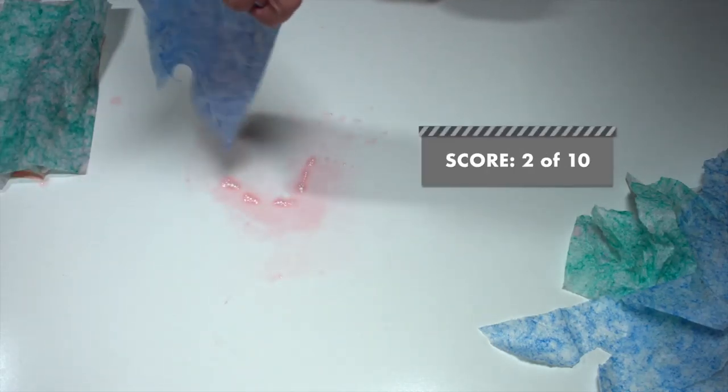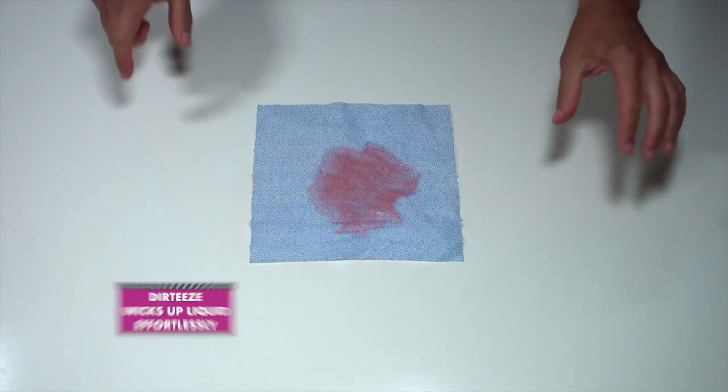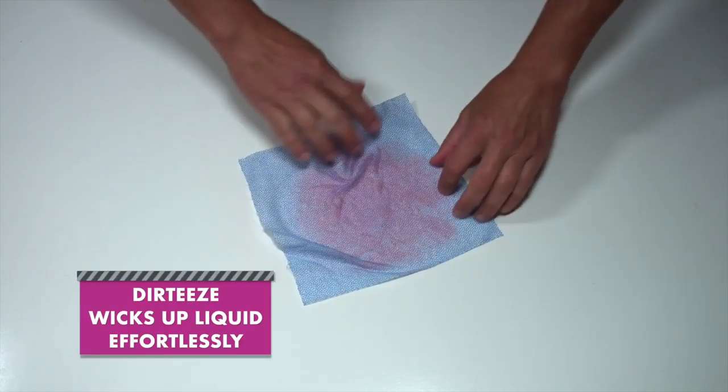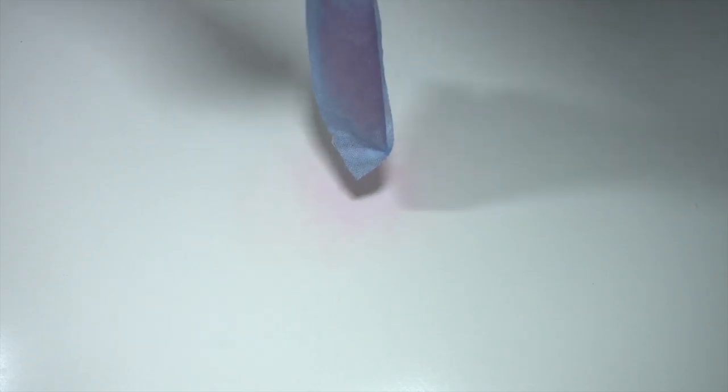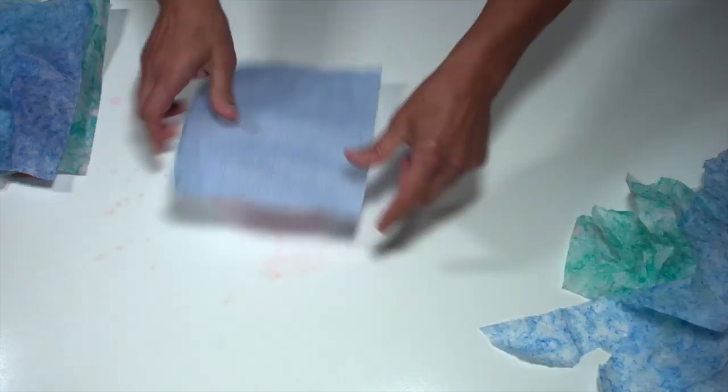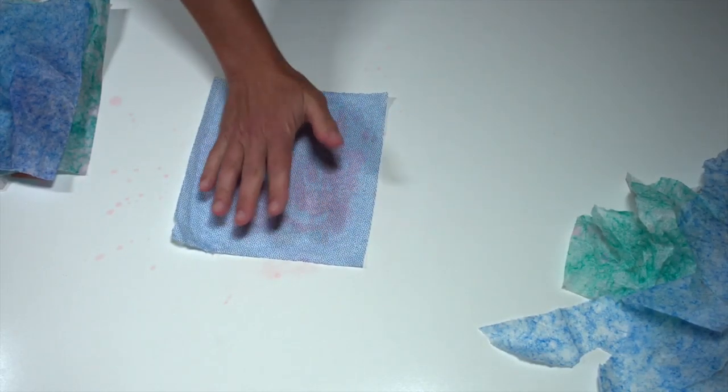Dirty's rough and smooth wicks up all the liquid, leaving basically nothing on the surface and nothing drips out. We even have enough left over to clean up after the other four scrubbing wipes fell short. Dirty's rough and smooth gets a 10 on the wicking and absorption test.